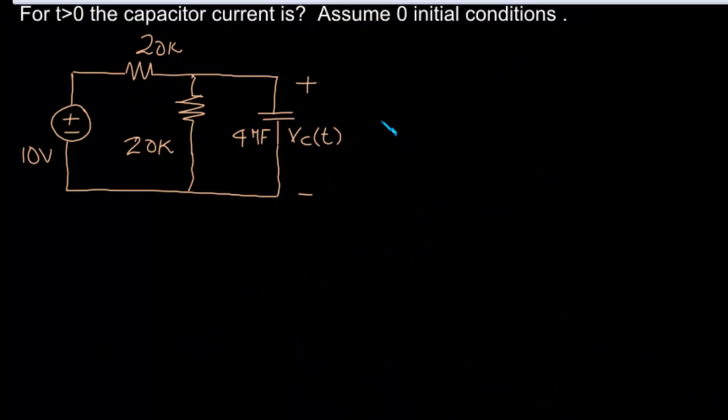For time t greater than 0, the capacitor current is, we are asked to assume zero initial conditions. So zero initial conditions means capacitor voltage, that means V initial, that is the initial voltage of the capacitor is 0V.